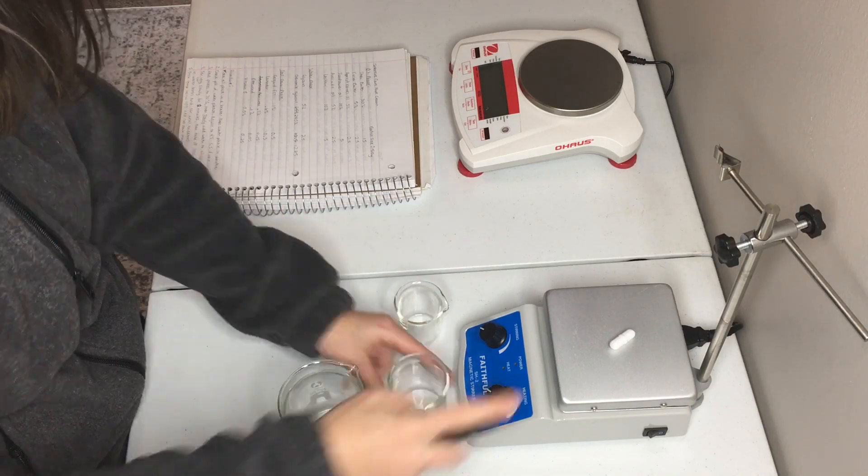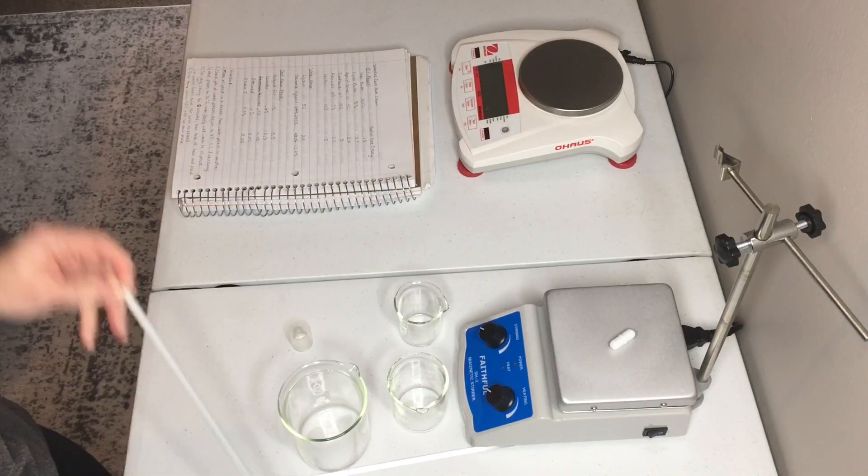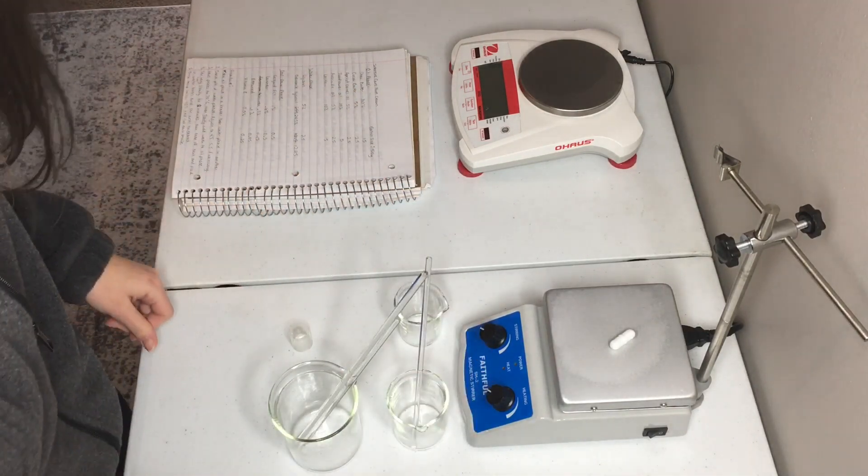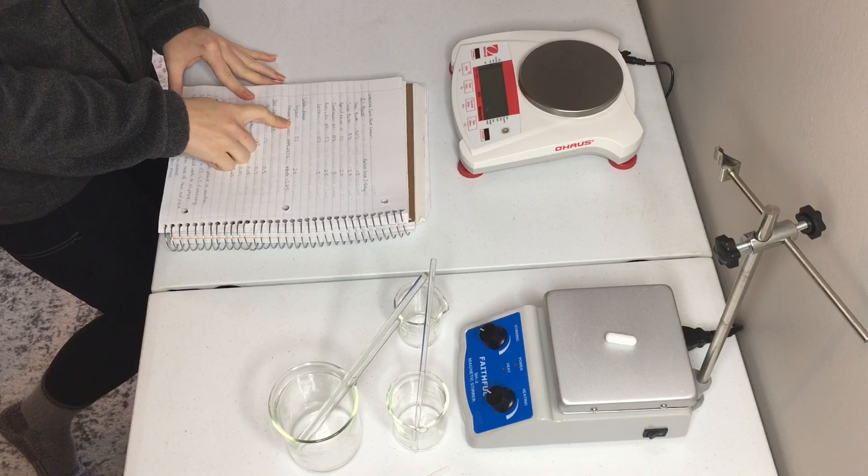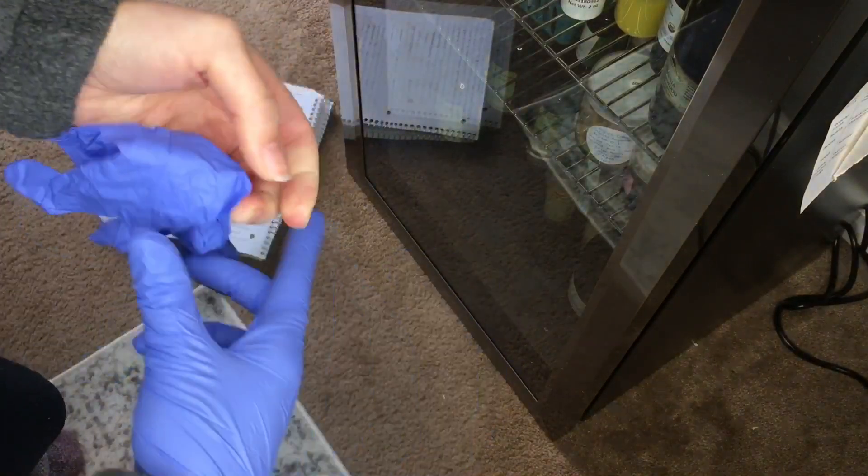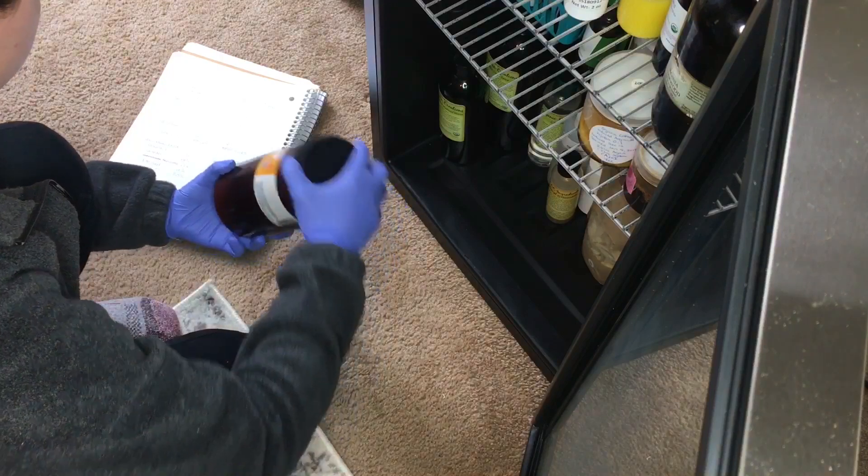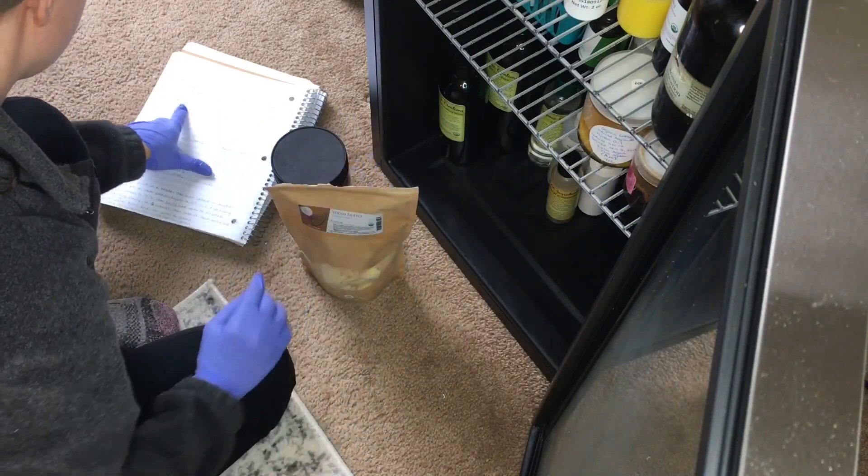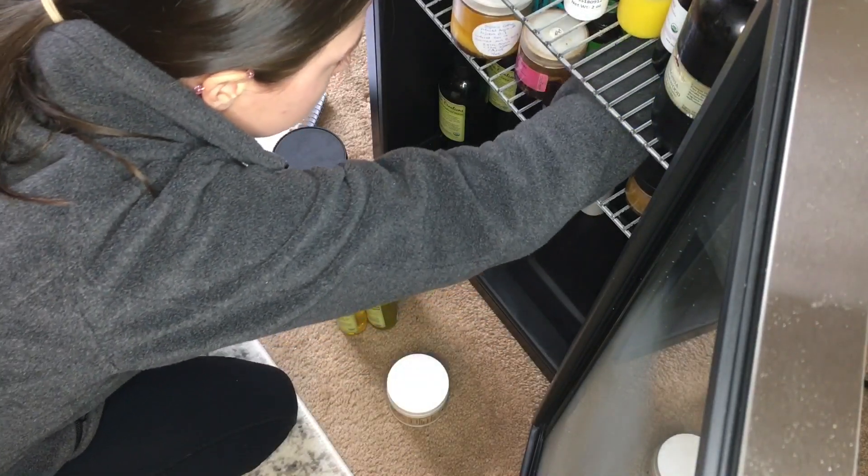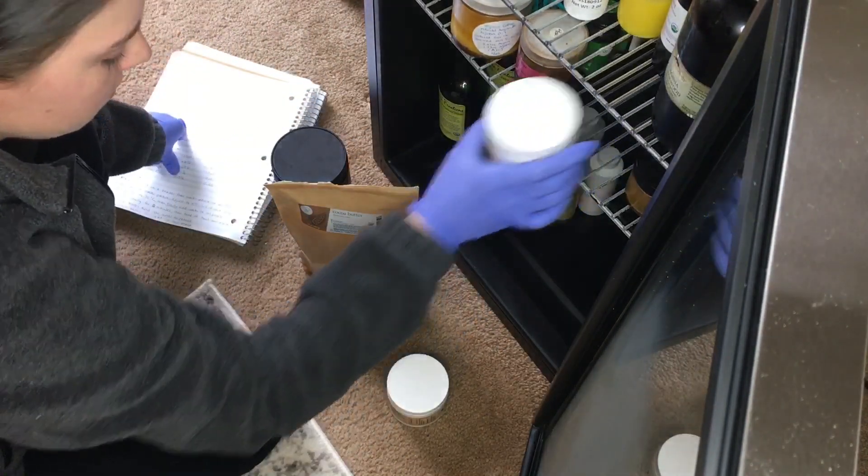So I first start off by sanitizing all of my equipment, and that is with ethanol alcohol. And then I do that first because it needs to dry before I can put any ingredients into the beakers. Now I'm just going through all the stuff that I need to make this emulsion. And here I put on my gloves so that I can get the ingredients out of my refrigerator. And I didn't record this, but I always wash my hands before I put my gloves on with hot water and soap.